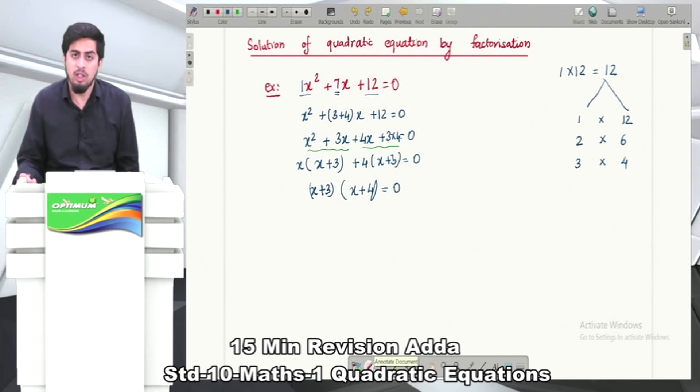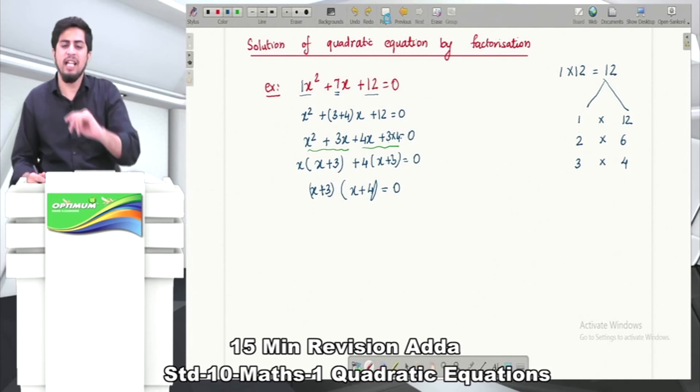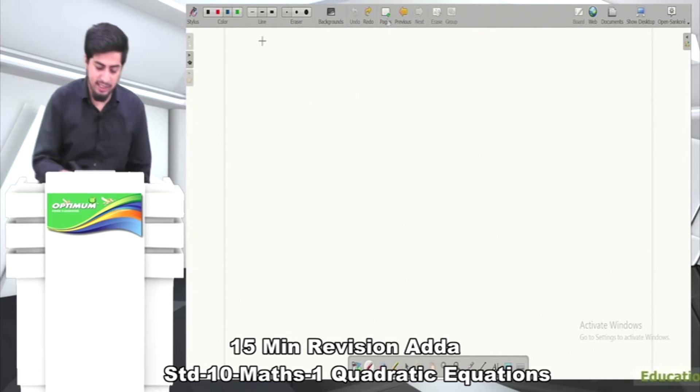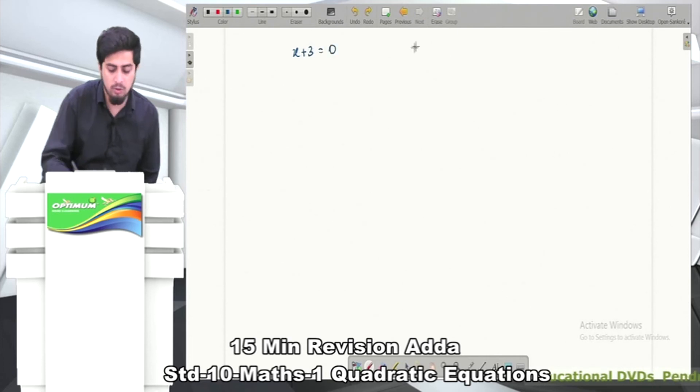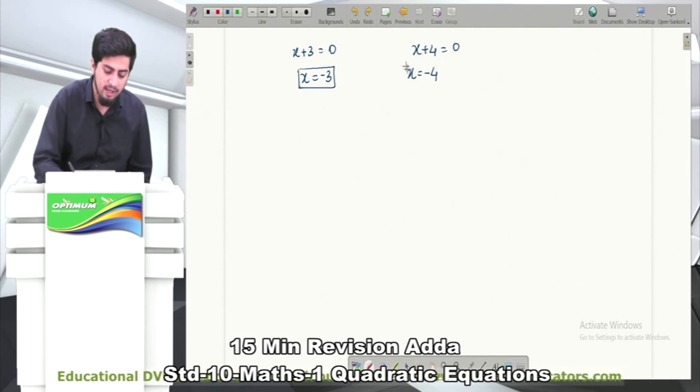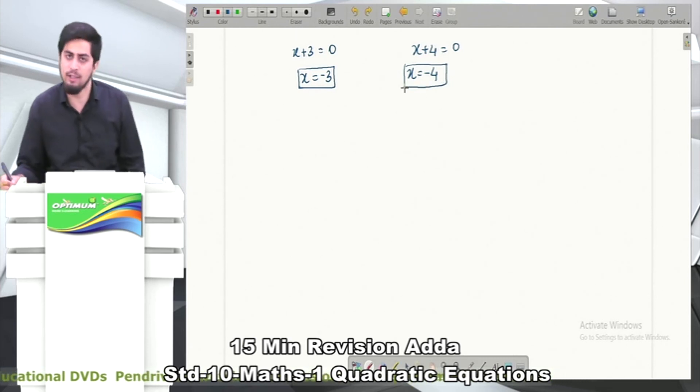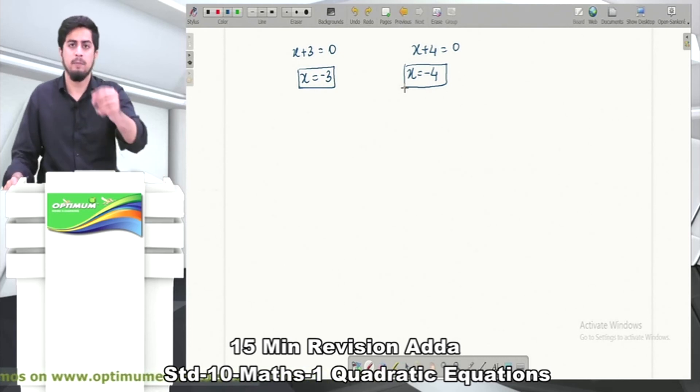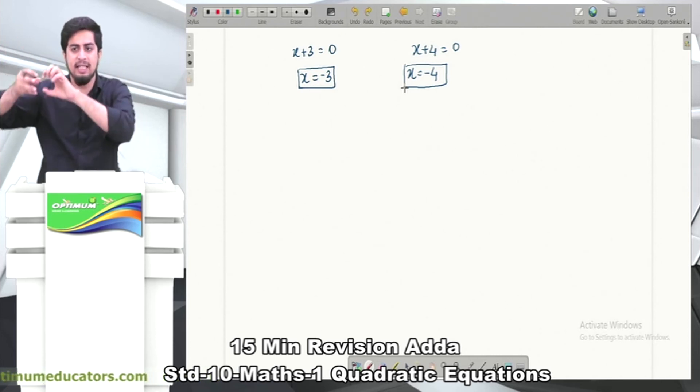In the next step, we equate x + 3 and x + 4 separately with zero. First: x + 3 = 0, giving x = -3. Second: x + 4 = 0, giving x = -4. These are the two solutions for our quadratic equation. We get two values of x: one is -3, one is -4. We follow these same steps ahead to find the values of x.